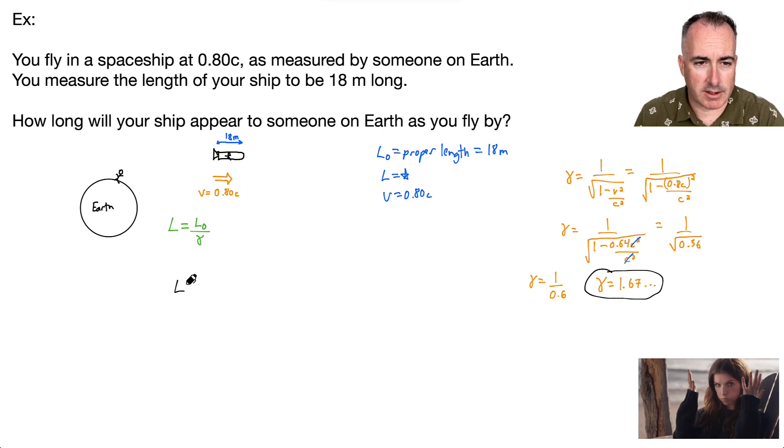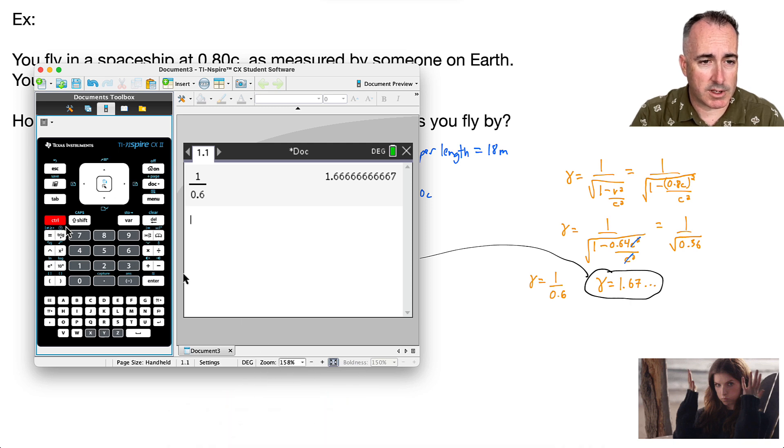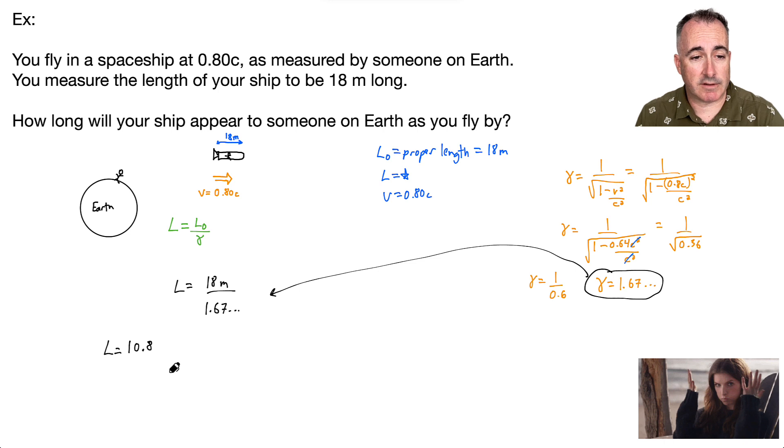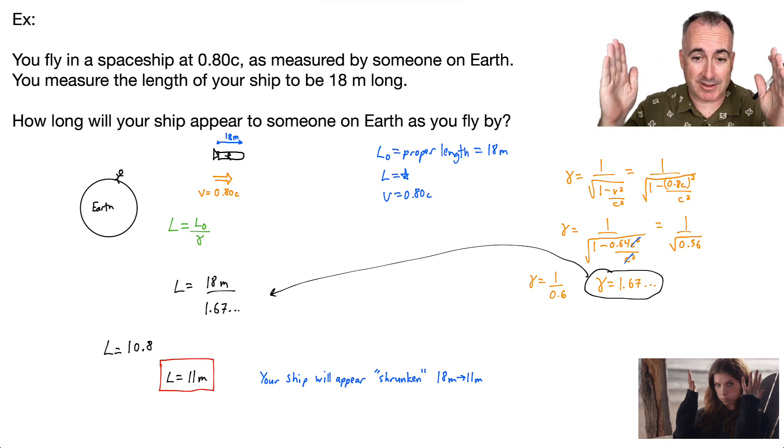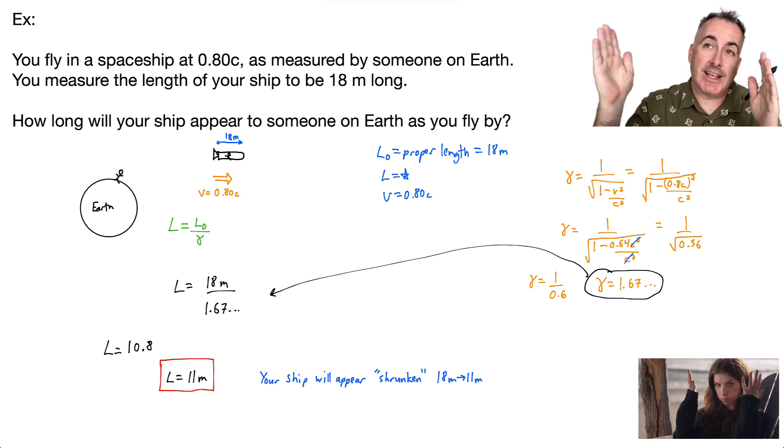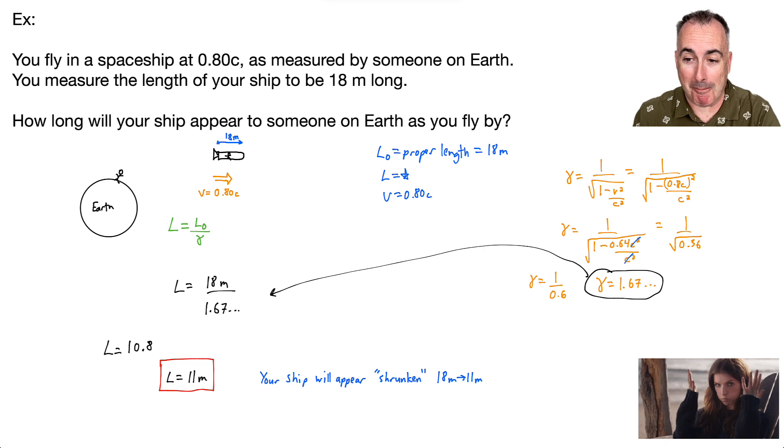L equals my proper length, which is 18 meters, divided by 1.67, because that's my gamma. What do I end up with? L equals 18 over that answer, which gives me 10.8. With two significant figures, it's 11 meters. Your ship will appear to have shrunken. It went from 18 meters, which it really is, and they will see it appear as only 11 meters. Isn't that mind blowing?